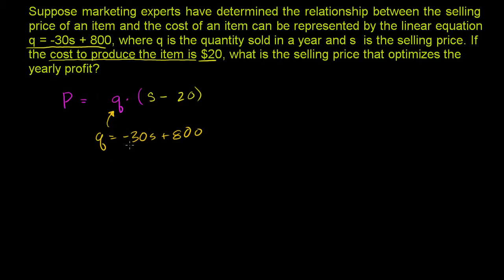So let's just use it. So if we substitute negative 30S plus 800 for Q, we get negative 30S plus 800 times S minus 20. Times, let me do this in a different shade of yellow, times S minus 20.